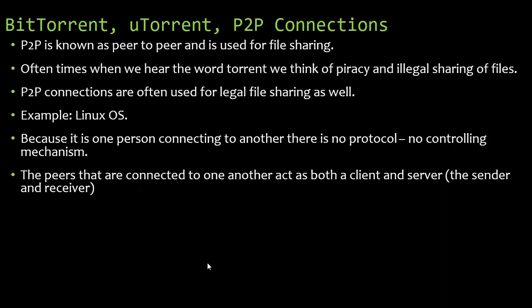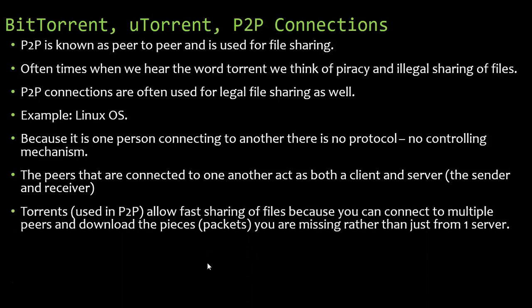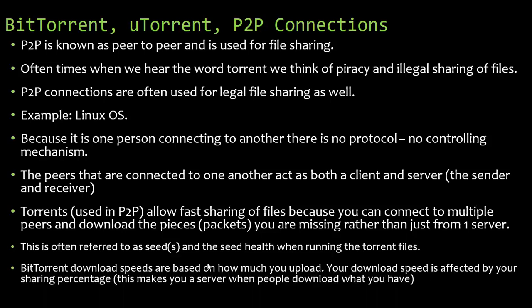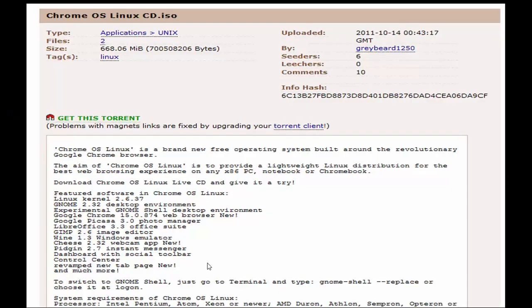The peers connected to one another act as both a client and a server — both a sender and receiver. Torrents allow fast sharing of files because you can connect to multiple peers and download the pieces — the packets — you are missing rather than just from one server. This is referred to as seeds and seed health when running torrent files. BitTorrent download speeds are based on how much you upload — your download speed is affected by your sharing percentage. You can't just download and log off; they'll throttle your download speed.